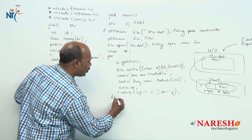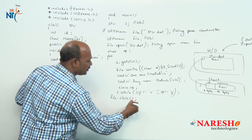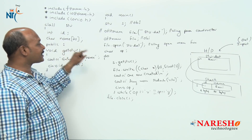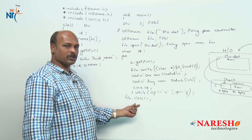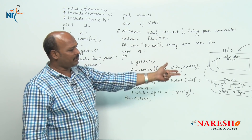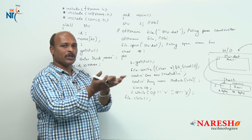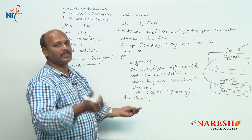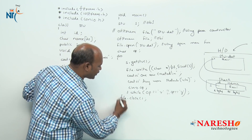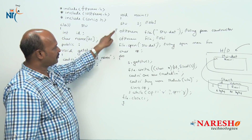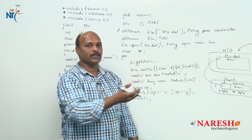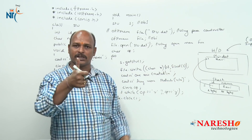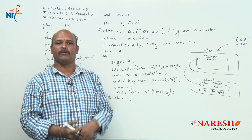When the user says no, I call file.close() — this is a member function of the ofstream class. Closing the file secures the data. The main function also closes. This is how to transfer stack data into the hard disk and keep it secure. Thank you for watching.